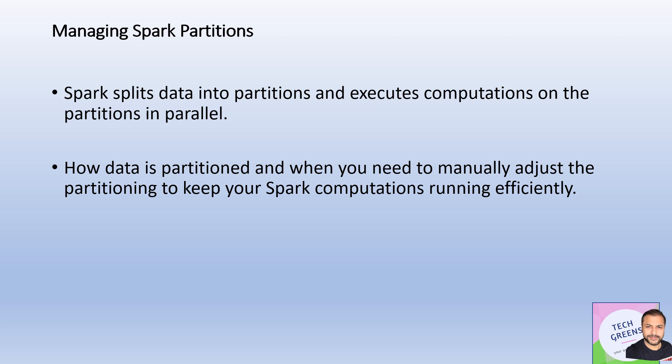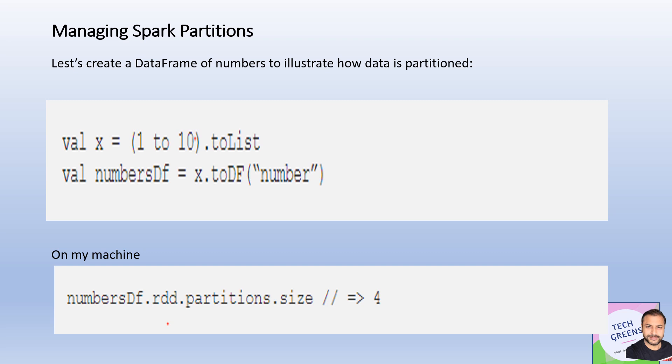Spark splits data into partitions — that's how data is distributed across nodes in the cluster. Each transformation or computation is performed on individual partitions, and that is how parallelism is achieved in distributed computing. The whole idea in this video is to understand the right way to optimize data partitioning in Spark so that your computations run effectively.